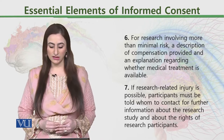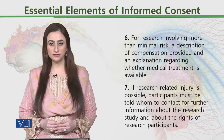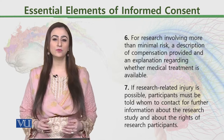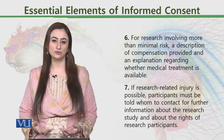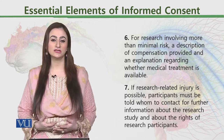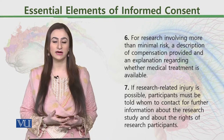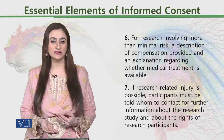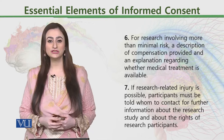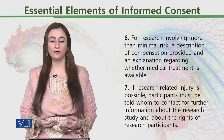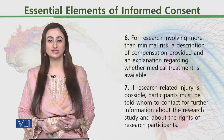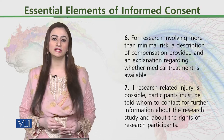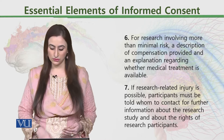If research-related injury is possible, participants must be told whom to contact for further information about the research study and about the rights of research participants. Injury could be of any type — trauma or accident can occur in exploratory studies. For instance, in depth perception studies where an infant is placed on a table at a height and allowed to crawl, there is a chance that one out of a hundred children may not have depth perception and could fall. In those situations, alternative arrangements must be in place, and we must always ensure the safety and security of participants.